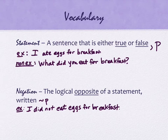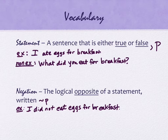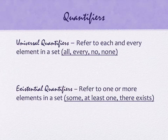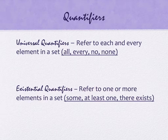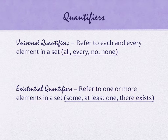There are some statements that are really easy to negate — all we had to do was put the word 'not' in and we were good to go. Other statements are harder to do that with. In particular, there are statements that have what we call quantifiers. There are two types of quantifiers. One is universal — it refers to each and every element in a set. Some keywords you see with a universal quantifier are: all, every, no, or none. These are the kinds of statements your mom told you — 'You always...' or 'You never...' — those are universal statements.